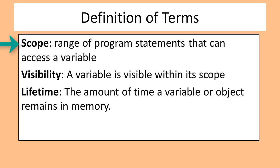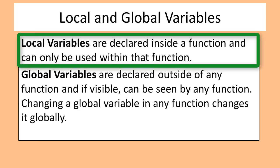Scope: the range of program statements that can access a variable. Visibility: a variable is visible within its scope. Lifetime: the amount of time a variable or object remains in memory. Local variables are declared inside a function and can only be used within that function.